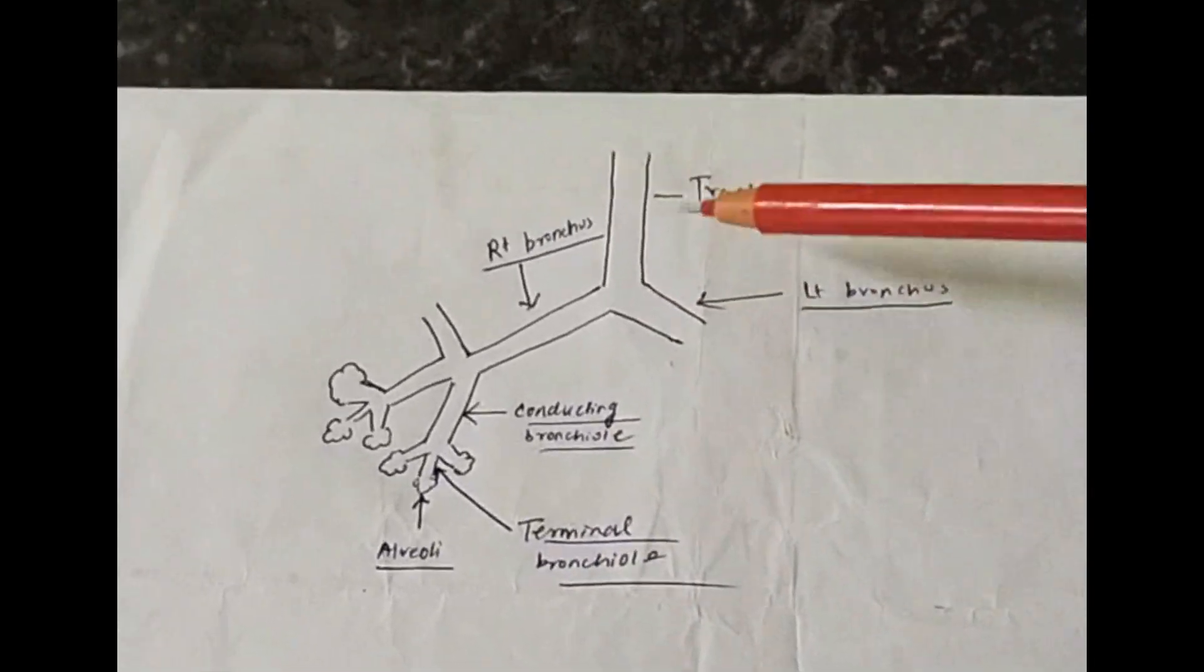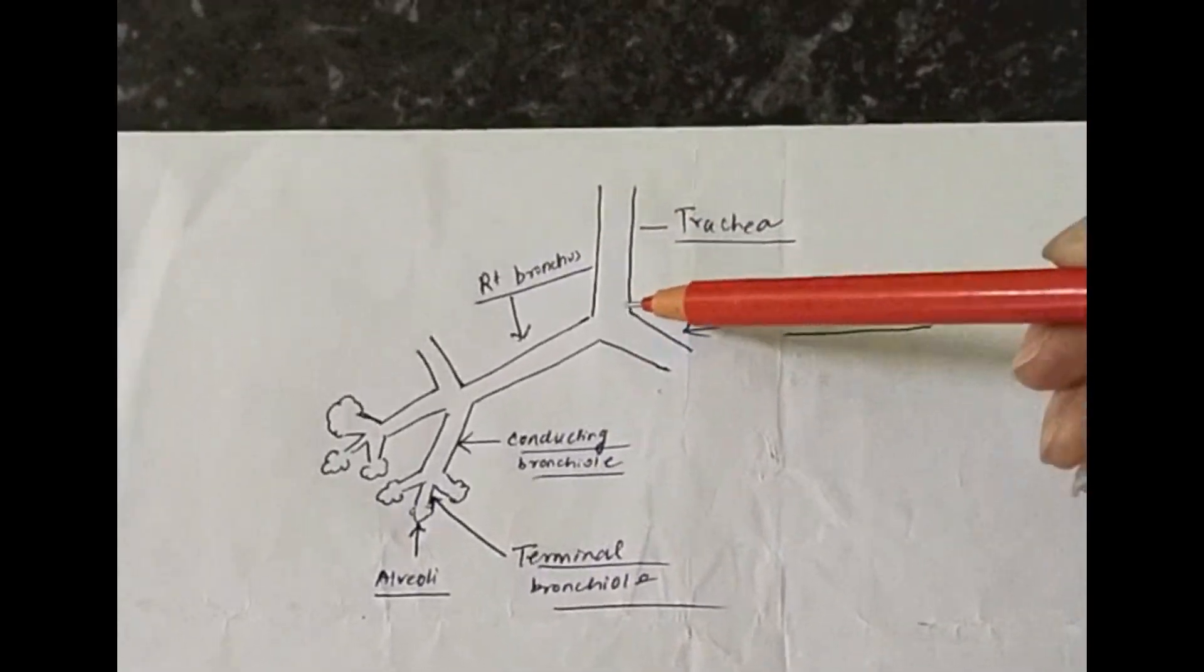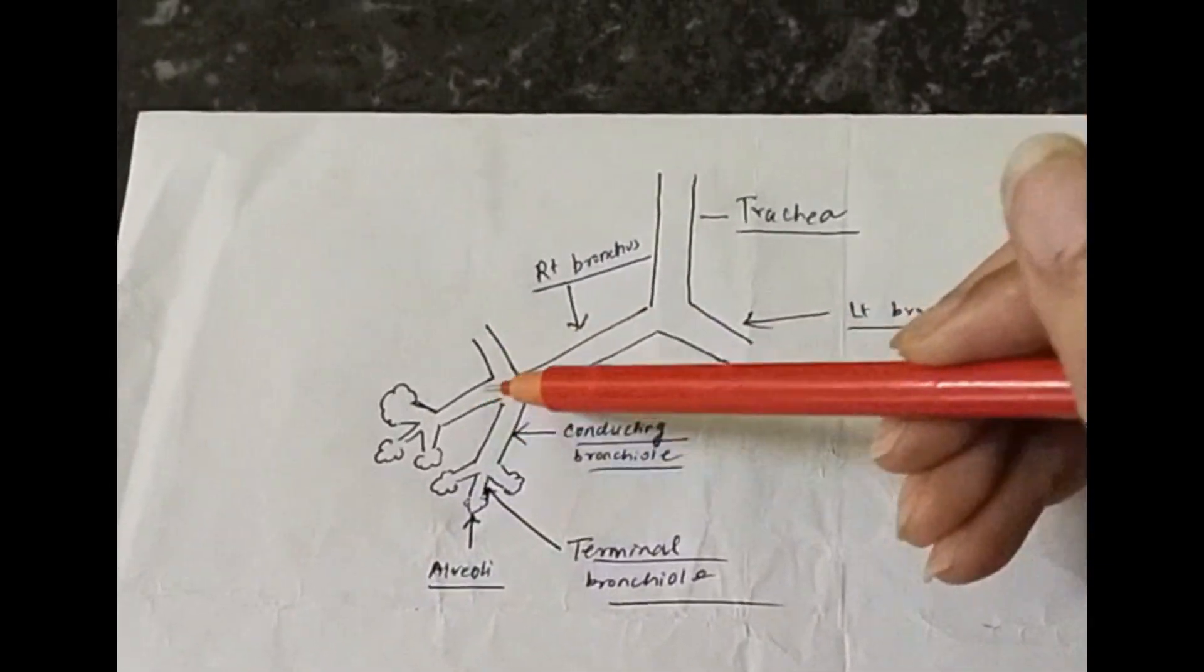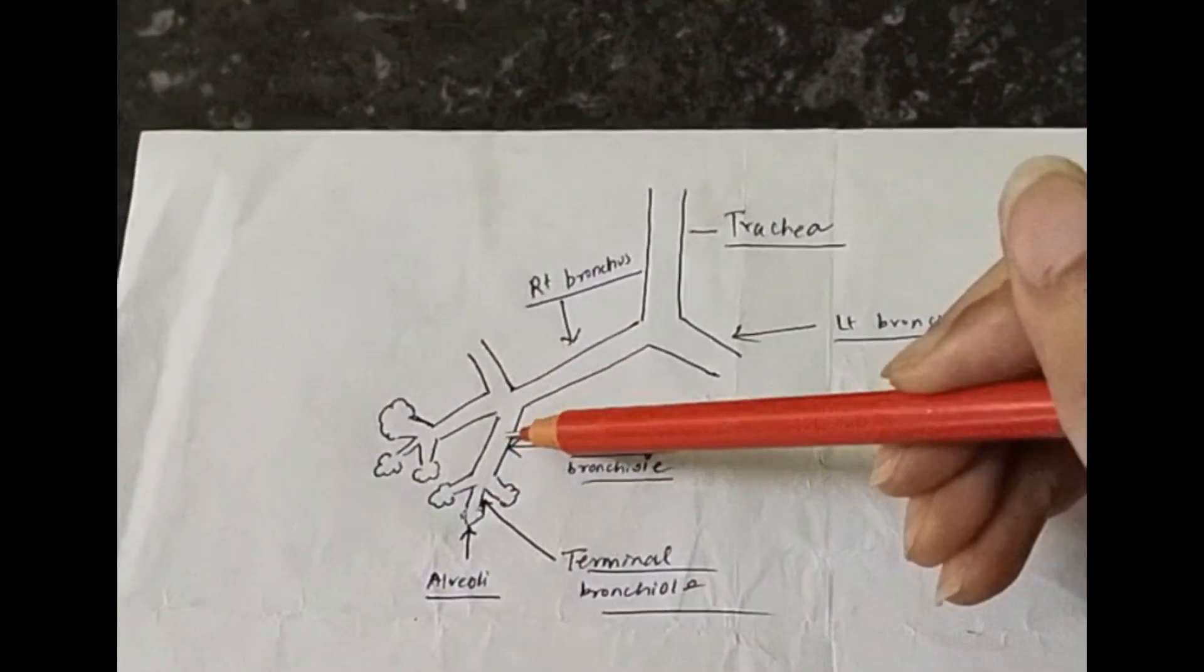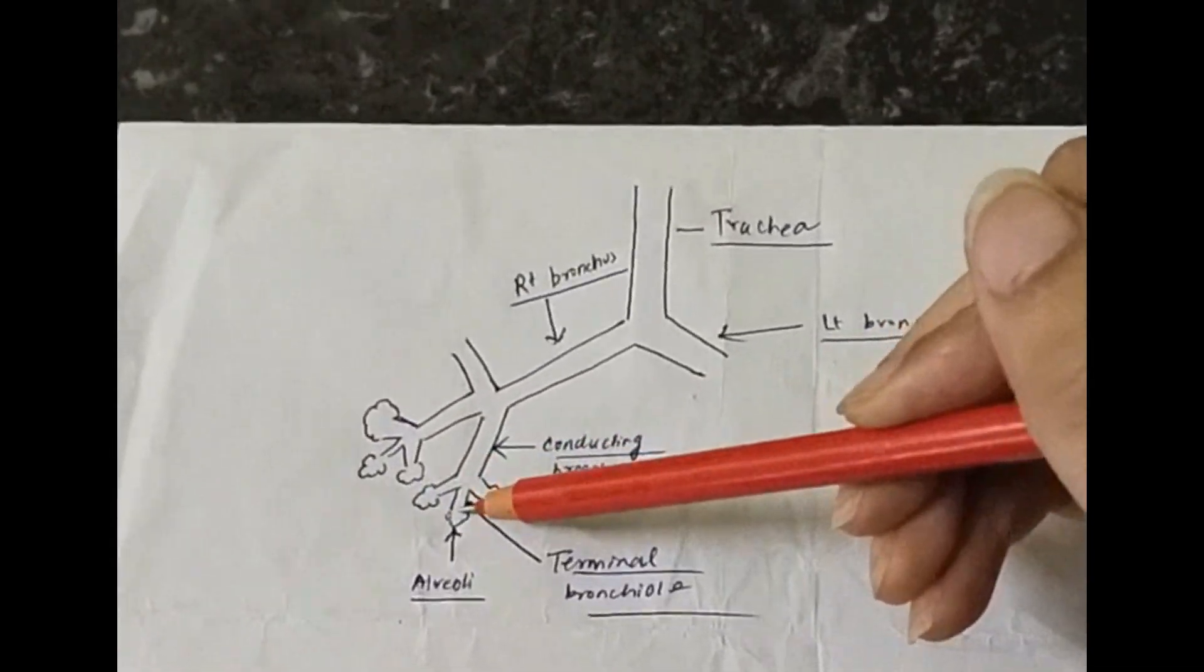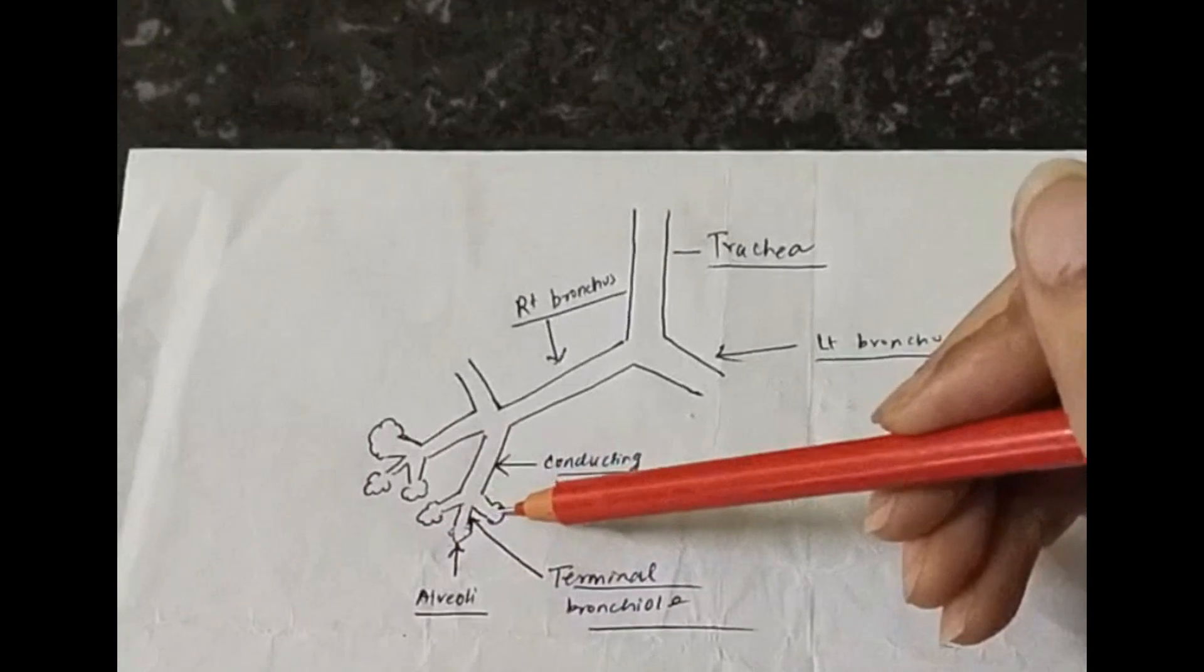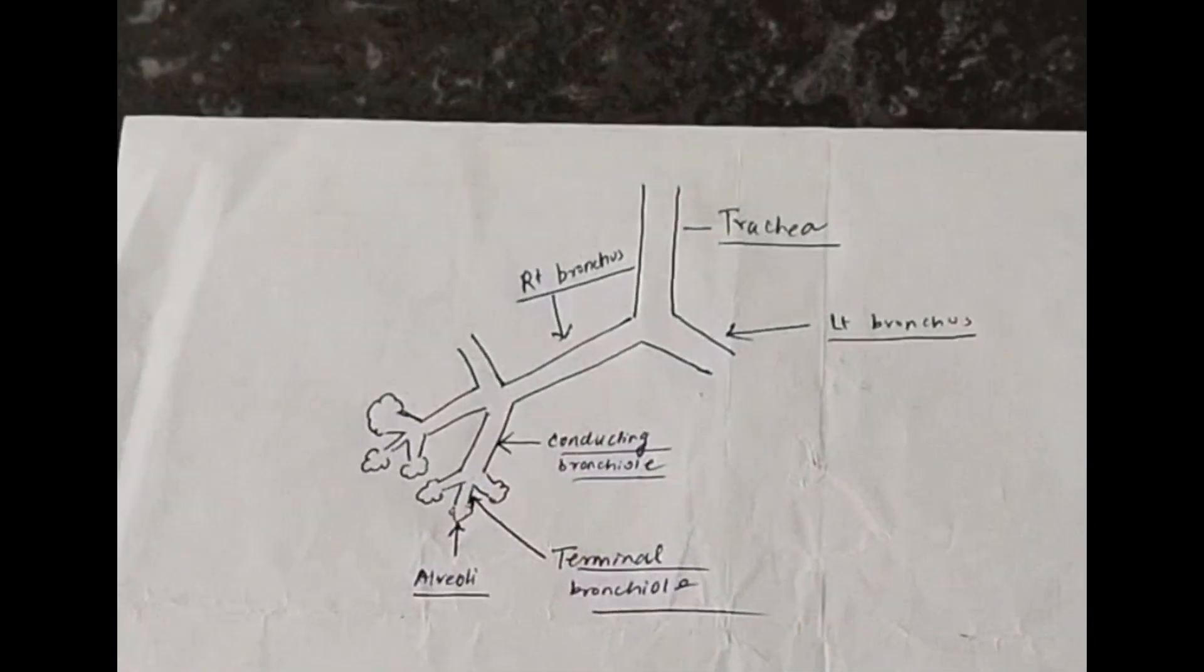Now we all are familiar with the classification or the division in the respiratory system. We have the trachea, we have the right and the left bronchus. Each bronchus divides into some conducting bronchioles. Each conducting bronchiole divides into terminal bronchioles and these terminal bronchioles end into air-filled bags that is called as acini.